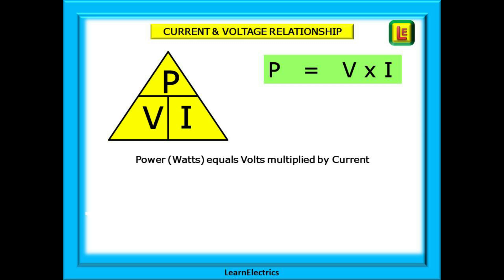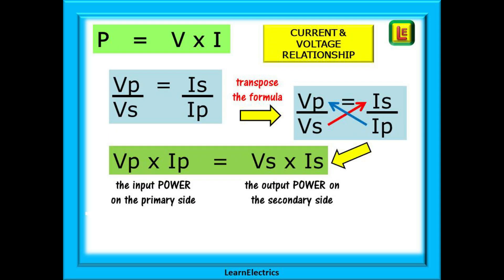Going back to the power triangle, we know that P equals V times I. Voltage times current gives us the power. Remember this. Now, back to the formula, and we've repeated it here. Vp over Vs equals Is over Ip. And we can transpose or rearrange this.